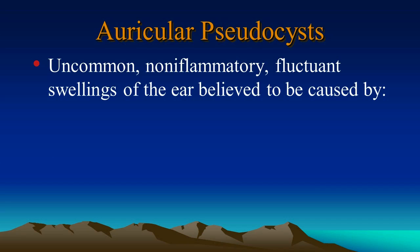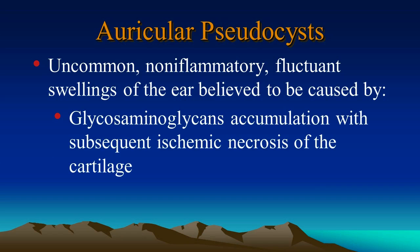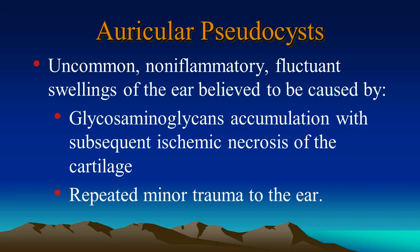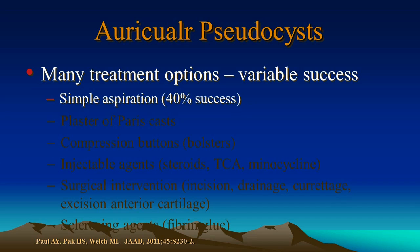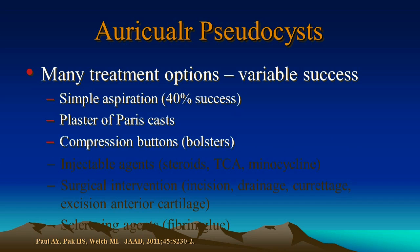Auricular pseudocysts are uncommon non-inflammatory fluctuant swellings of the ear believed to be caused by glycosaminoglycan accumulation with subsequent ischemic necrosis of the cartilage, and this is related to minor repetitive trauma to the ear. It is frequently observed in wrestlers. Many treatment options have been used with variable success. Simple aspiration is successful about 40% of the time. Plaster of Paris casts have been used, as have compression buttons using soft gauze bolsters.